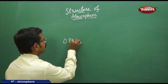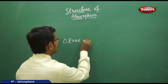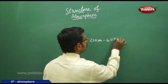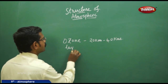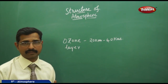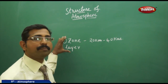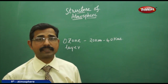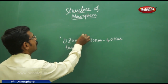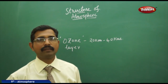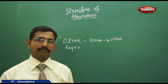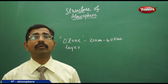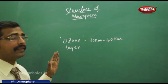Within the stratosphere we find the ozone layer, which exists from 20 km to 40 km above the earth's surface. The ozone layer is also called the 'life layer' because it protects us from the harmful ultraviolet rays of sunlight. If sunlight passes through without being stopped by the ozone layer, it can cause skin diseases and other health problems.